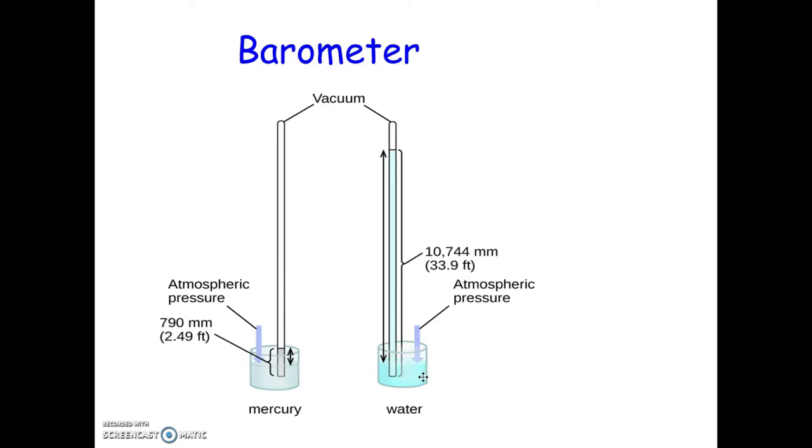If we look at this with water, under the same conditions, a very little amount of mercury can be supported by atmospheric pressure, but a huge amount of water can be. So this is why mercury is preferred to be used over water, because the size of the instrument is a little easier to deal with with mercury than it is with water. But again, mercury is a heavy metal, so we don't like to use that as much anymore.